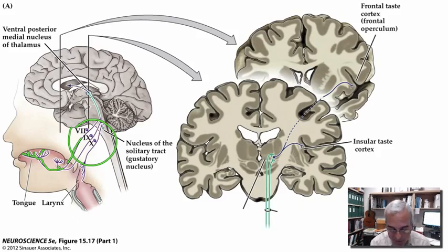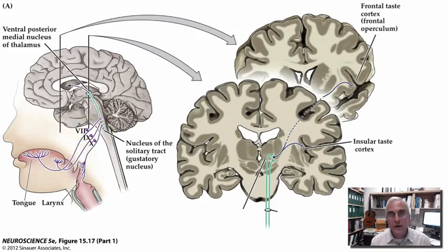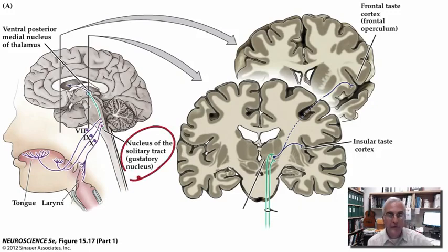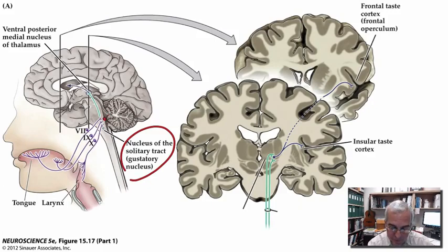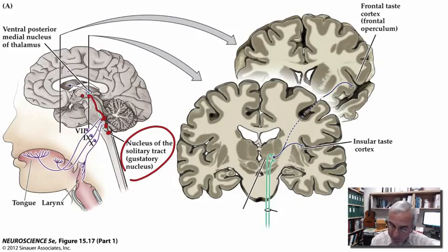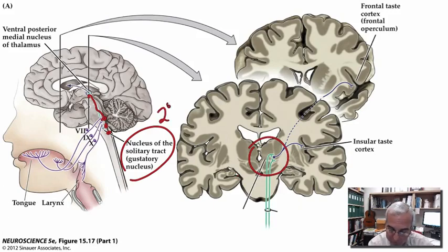The axons of cranial nerves 7, 9, and 10 project into the brainstem, where they synapse with a nucleus called the nucleus of the solitary tract. That nucleus receives this first-order information, and cells there grow axons that project from the brainstem up into the thalamus. The nucleus of the solitary tract would be second-order in this pathway.